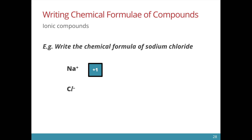We have the sodium ion with a plus one charge and the chloride ion with a negative one charge. So we need one sodium and one chloride ion to balance each other. Therefore, the chemical formula of sodium chloride is NaCl.